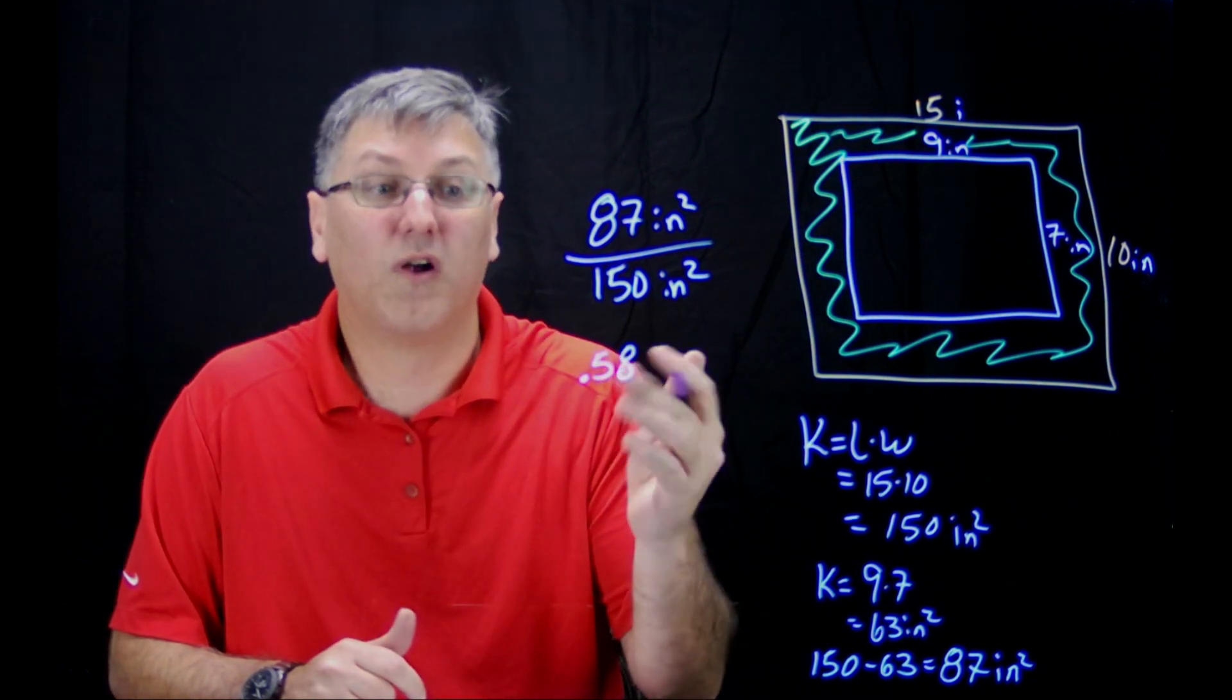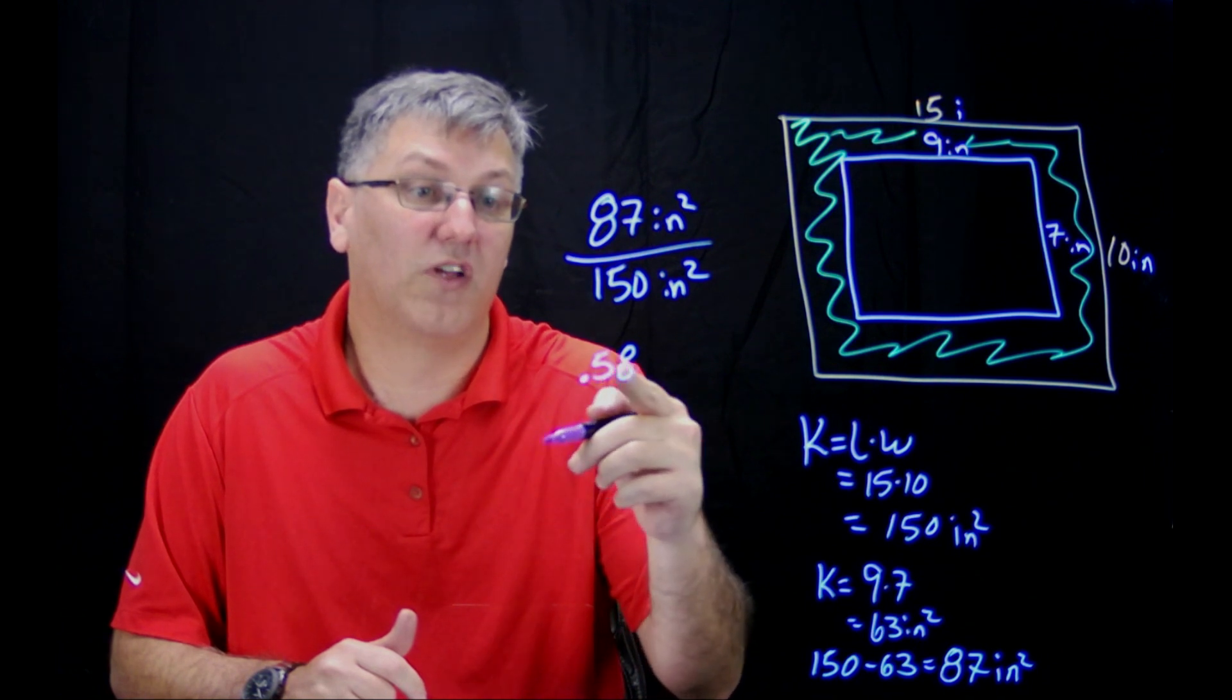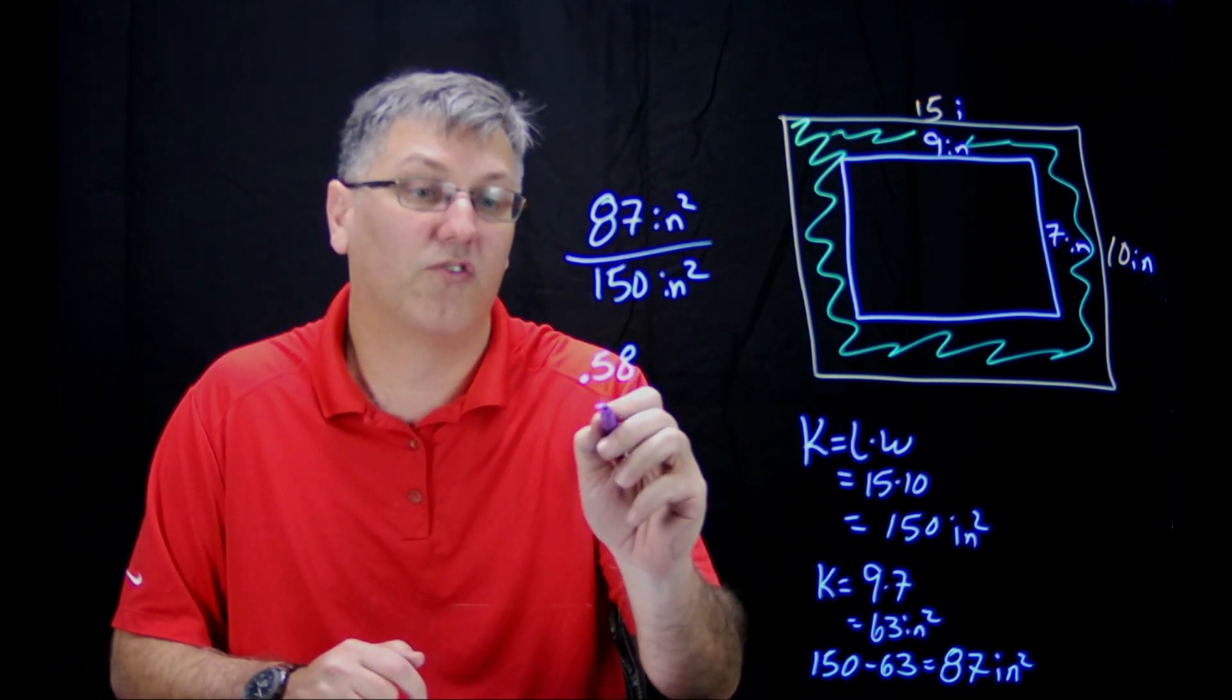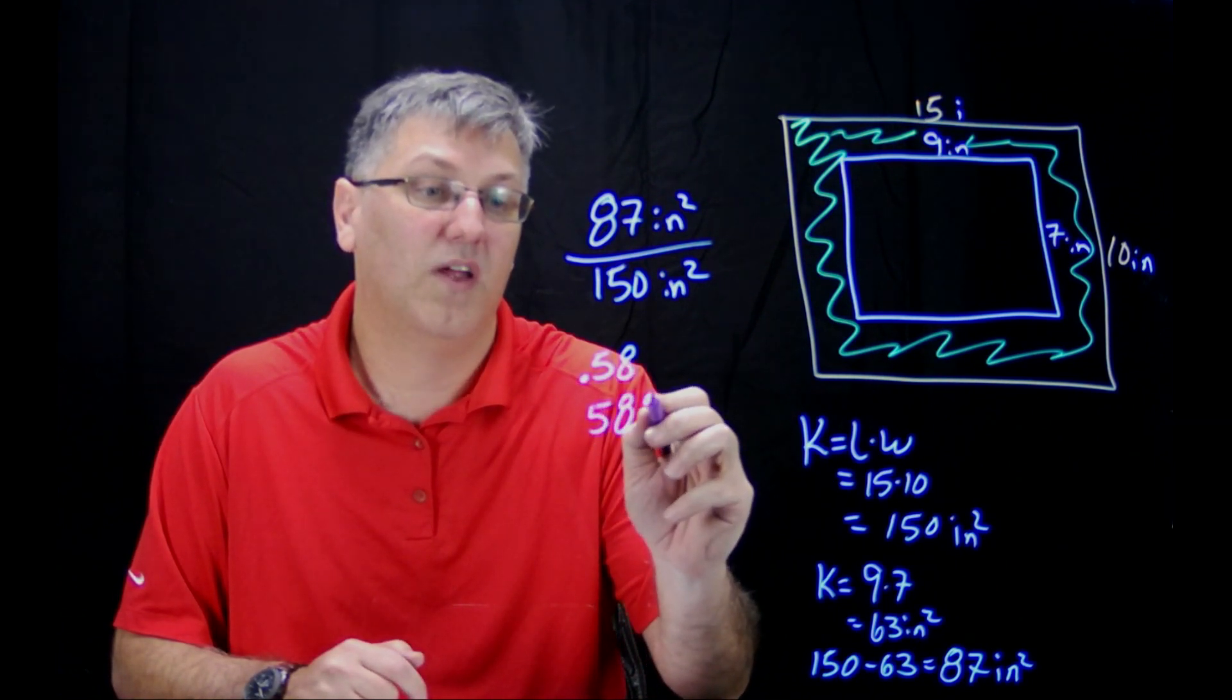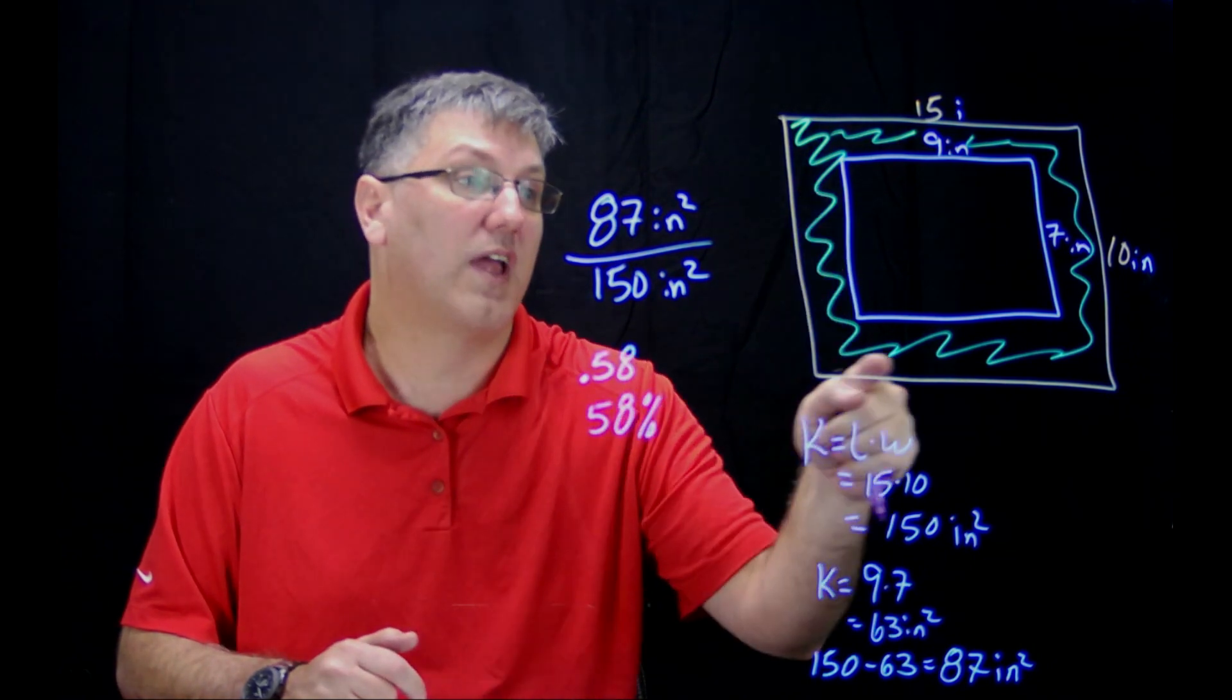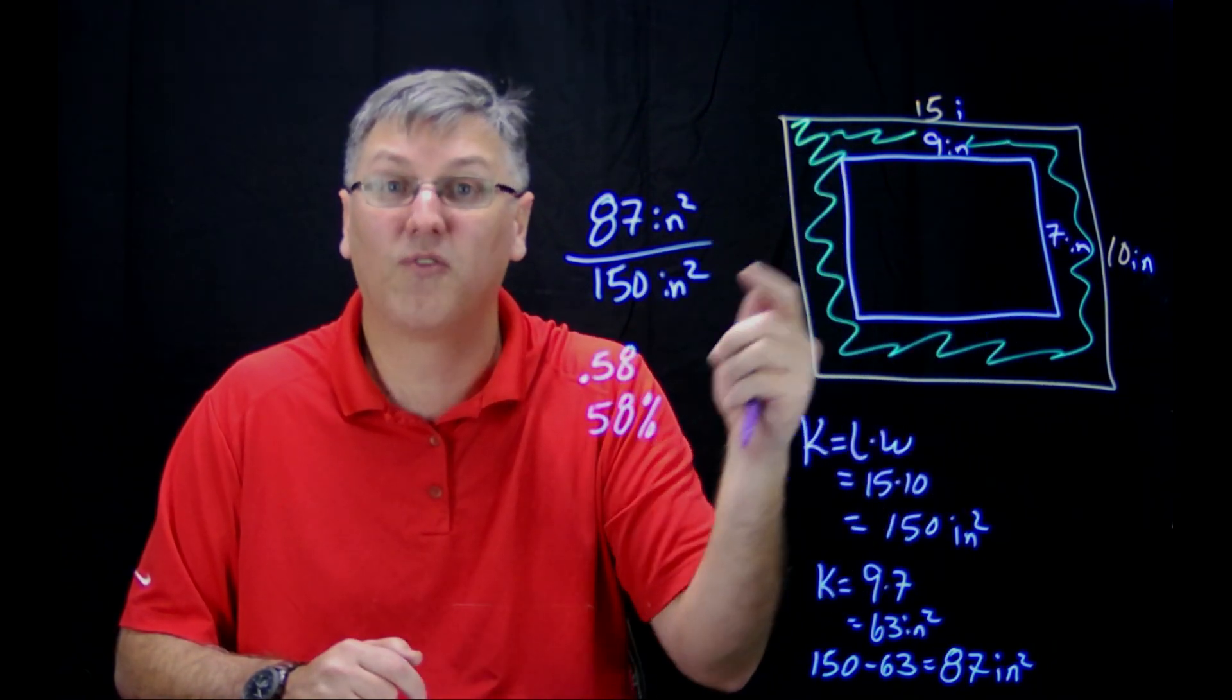So that means roughly, to find the percent, just move your decimal two spots or multiply by 100. So 58% of the time, if I just throw a random dart, I'm going to land in this shaded area. Now, this is definitely not drawn to scale.